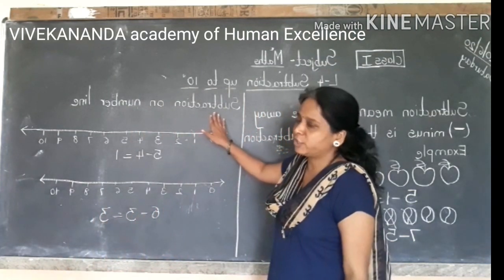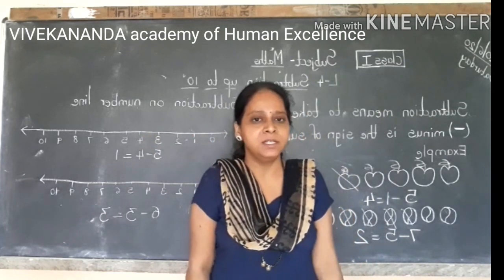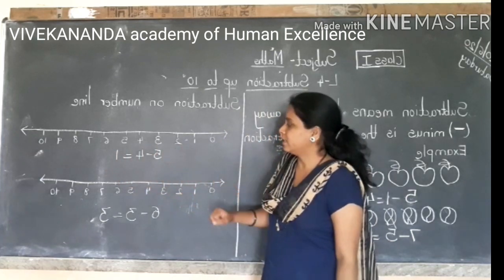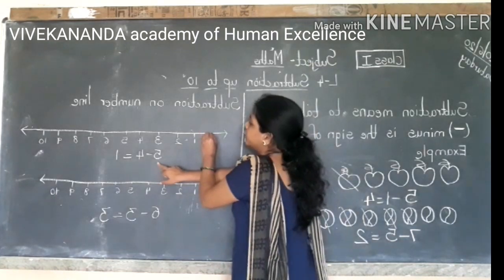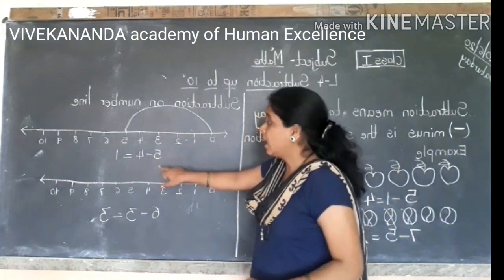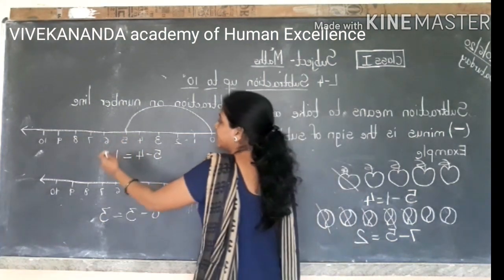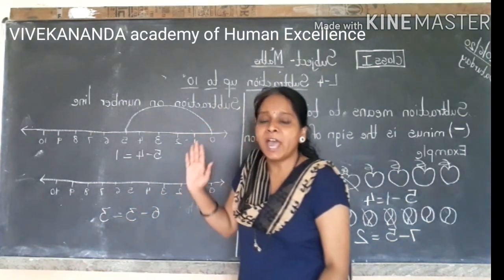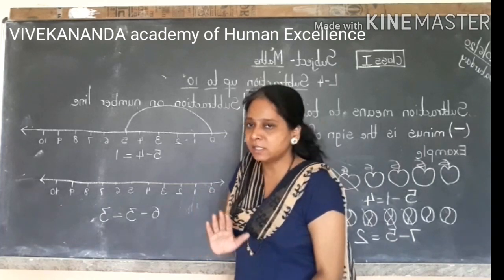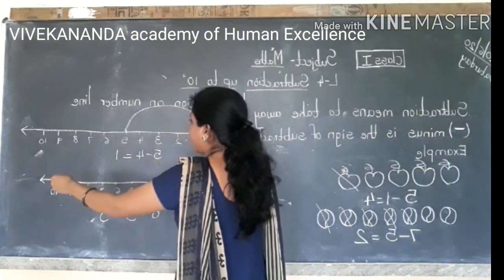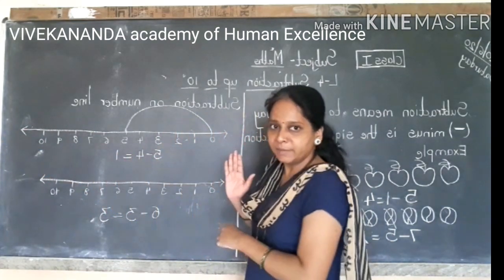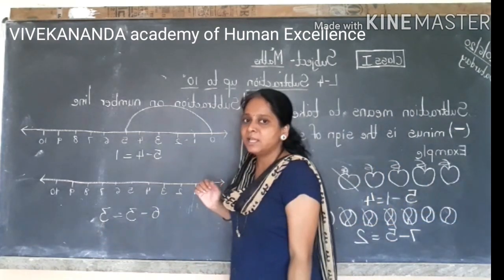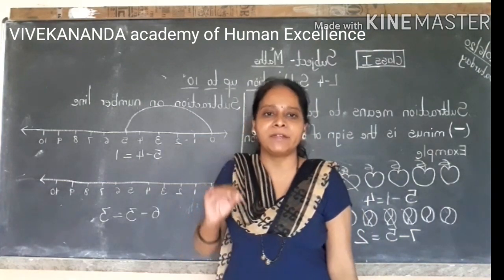Same way we will do the subtraction on the number line. Number line पर हमें subtraction सीखना है. See this number line — हम लोग addition करते समय right side जाते थे, but subtraction करते समय हमें left side आना है, मतलब we have to move towards the backward side. Addition करते समय हम आगे जाते थे, but subtraction करते समय हमें पीछे आना है — backward side. समझ में आया?